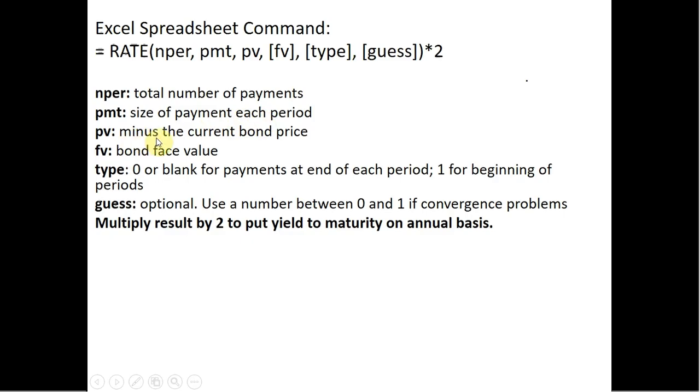pv is going to be negative or minus the current bond price. It's negative because from the investor's point of view, when you buy the bond, you're giving out cash, so a negative cash flow.